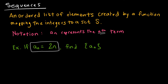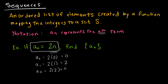Typically you're going to start with a sub 0. So a sub 0 is 2 times 0, which is 0. Then a sub 1 is 2 times 1, which is 2. A sub 2 is 2 times 2, which is 4. A sub 3 is 2 times 3, which is 6. So the set of values that create this sequence would be 0, 2, 4, 6, and this pattern would continue.